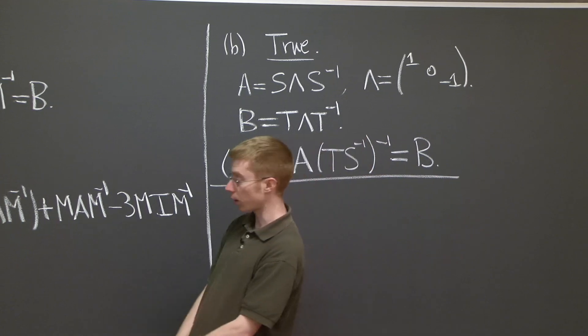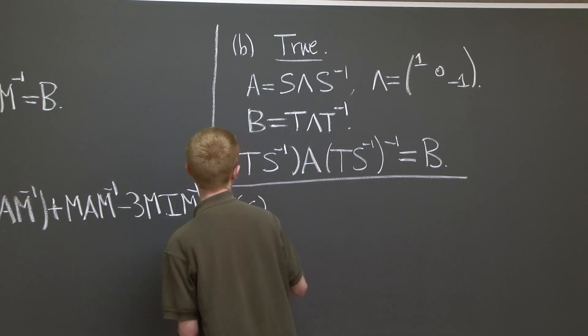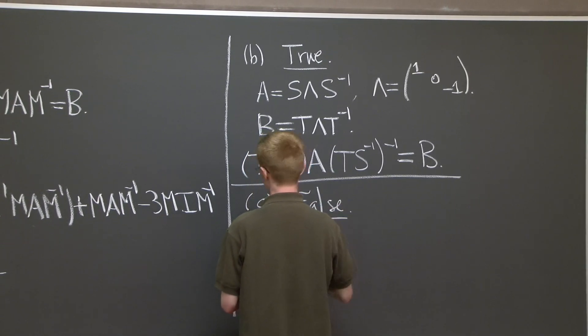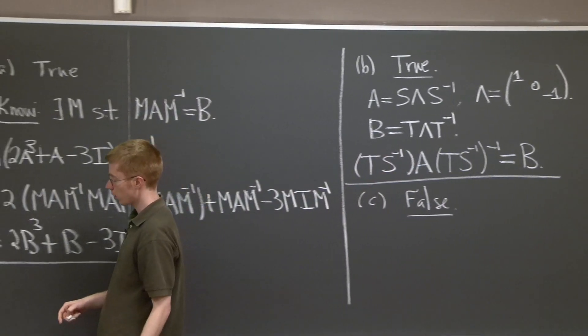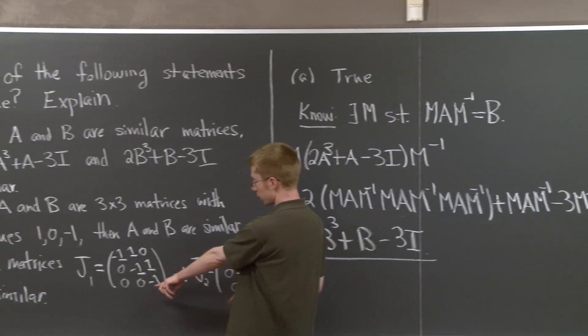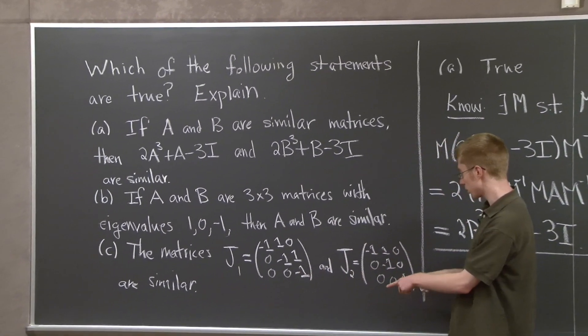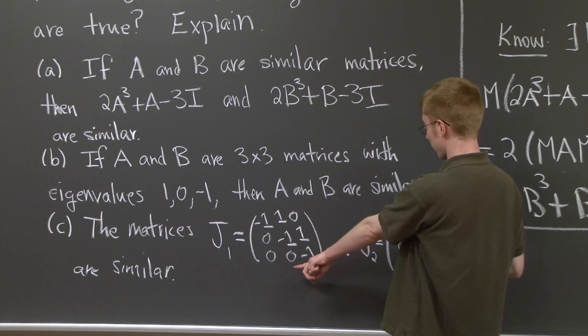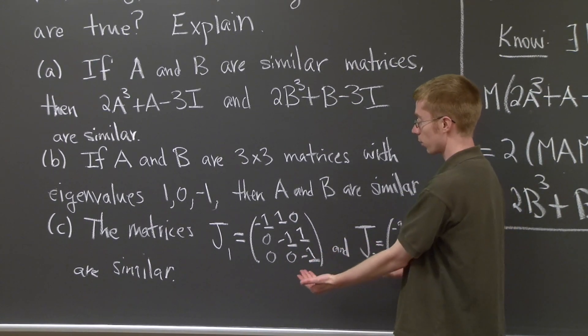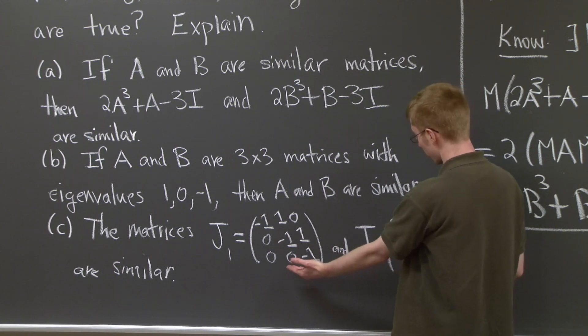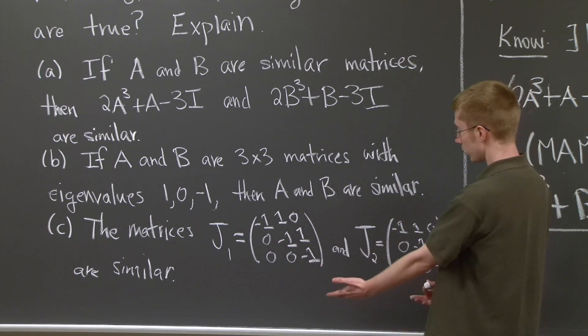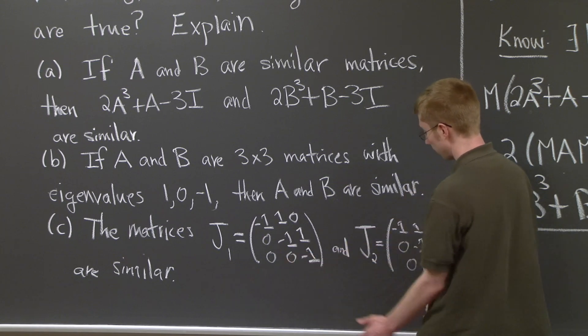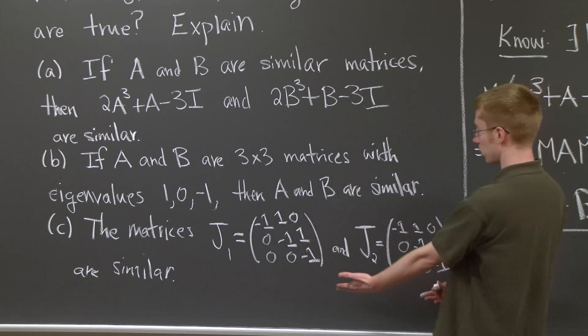Now let's take on part C. Part C is false. Let's come back over here and look at these two matrices, J1 and J2. Well, the first thing you should see is that these two are Jordan blocks. And they're different, or they're, sorry, not Jordan blocks. They're matrices in Jordan normal form. And they're different matrices in Jordan normal form, so they will not be similar. But let's actually see why.